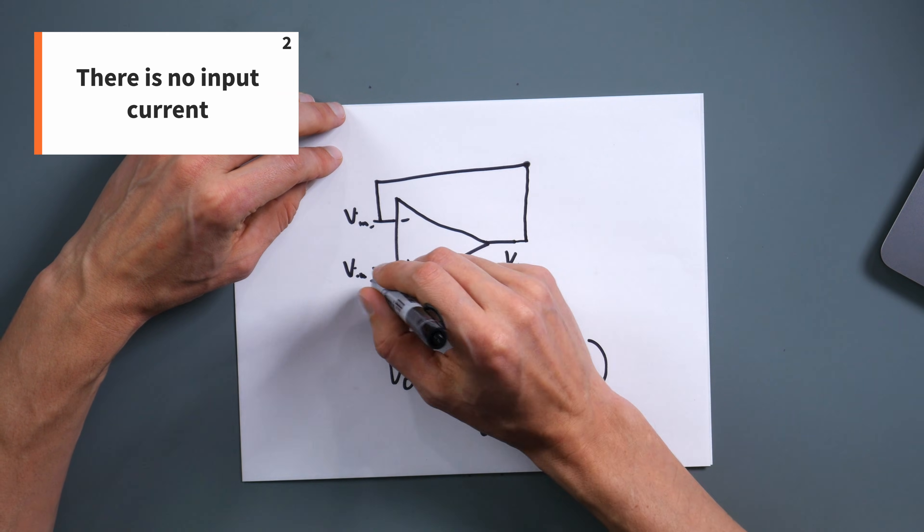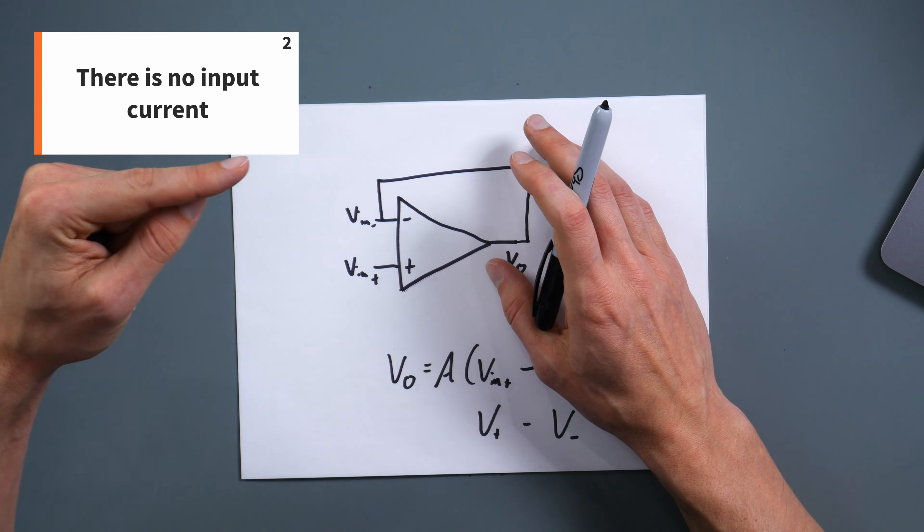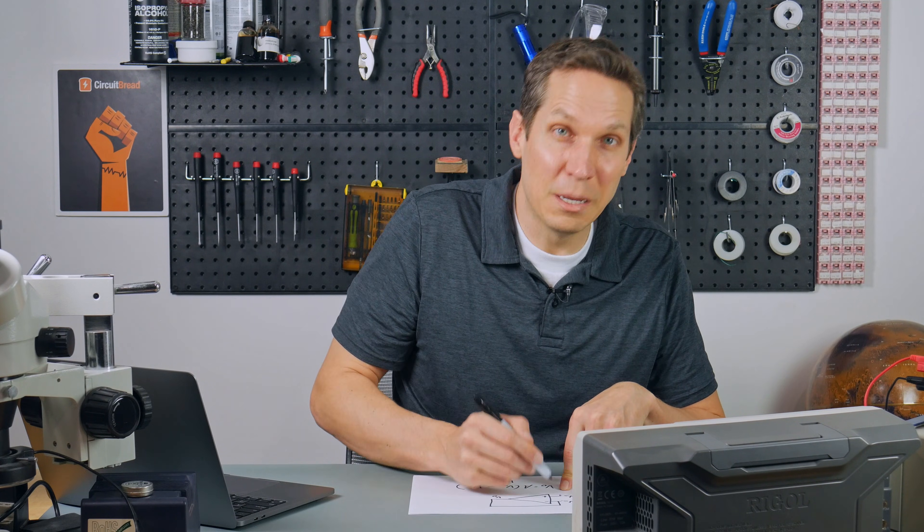Principle number two is pretty interesting: there is going to be zero current into the inputs. There is absolutely no input current into V minus or V plus. That really simplifies things because you don't have to deal with what current is going in — you just know it's going to be zero. So if you have something coming in and something going out, those two parts of the circuit have to have the same current in them.